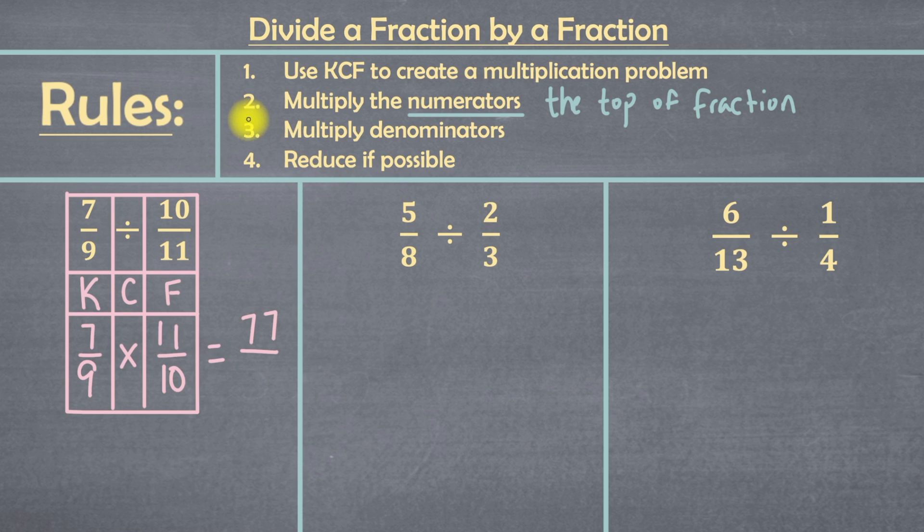Now we'll go to step 3, which is to multiply our denominators. And in case you don't remember, denominators are the bottoms of the fractions. So our denominator in this fraction is 9. And our denominator in this fraction is 10. And since step 3 says to multiply our denominators, we're going to multiply 9 times 10. And that's going to give us 90.